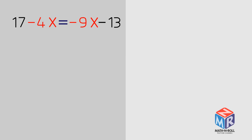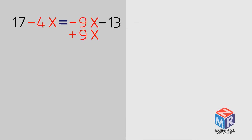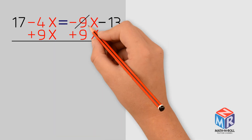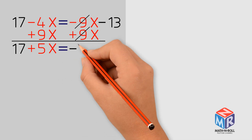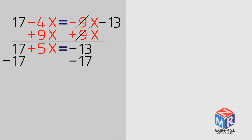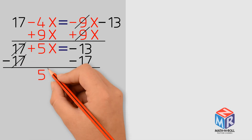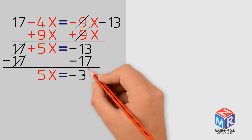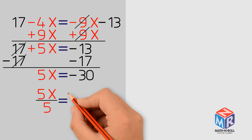17 minus 4x equals negative 9x minus 13. First, we add 9x on both sides. Then we subtract 17 from both sides. We are left with 5x equals negative 30. To get x by itself, we divide both sides by 5.